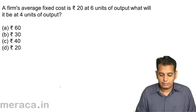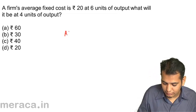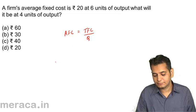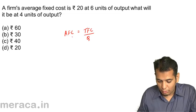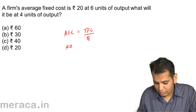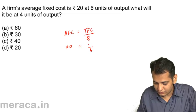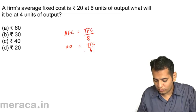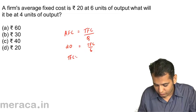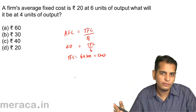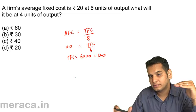Average fixed cost equals total fixed cost upon quantity. We have the average fixed cost as 20 for 6 units. Therefore, we get the total fixed cost: 6 into 20 equals Rs. 120. The total fixed cost always remains constant.